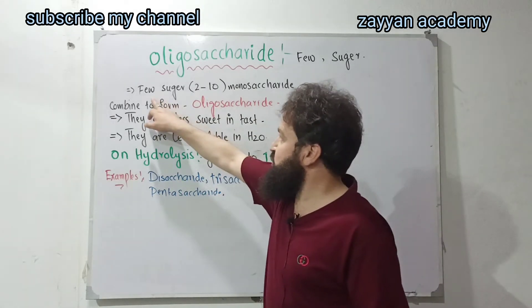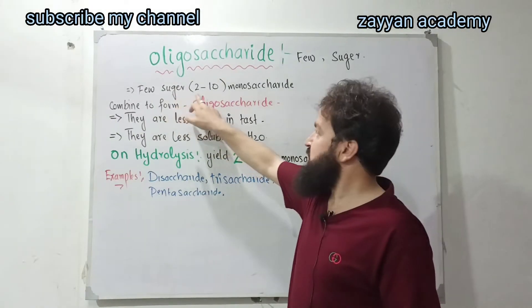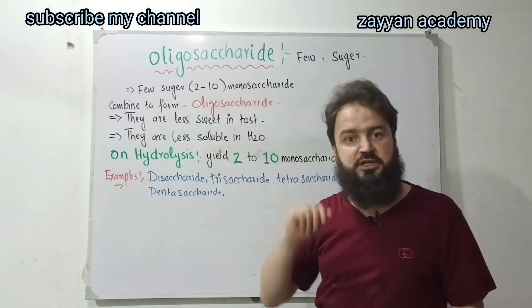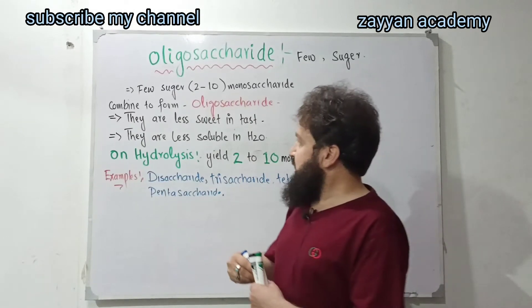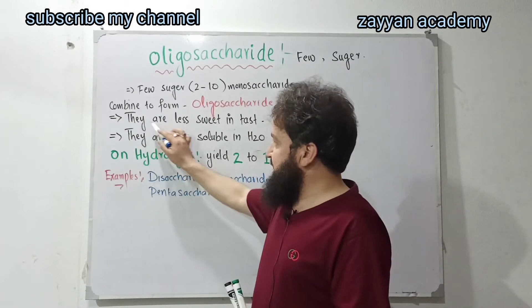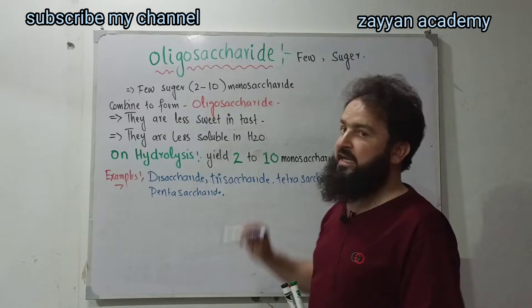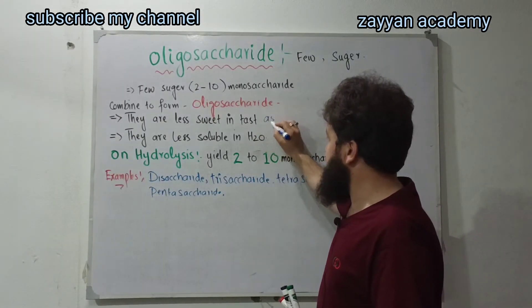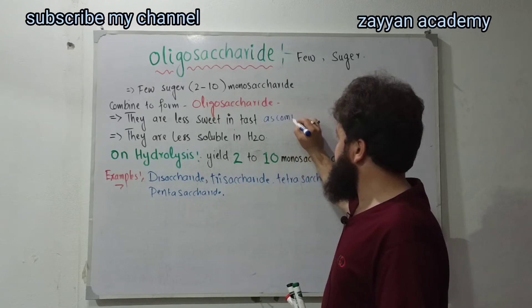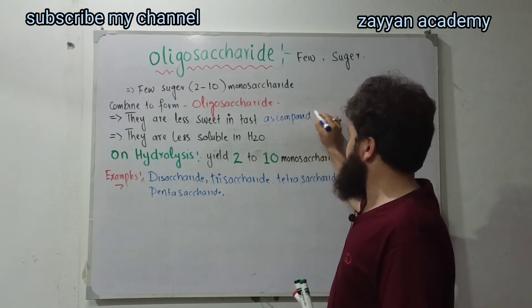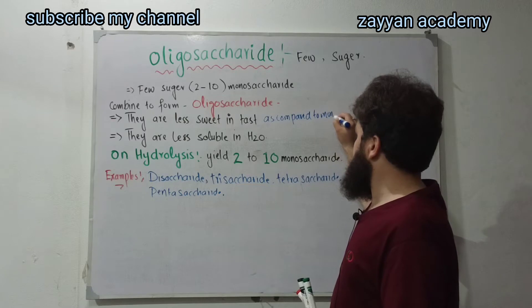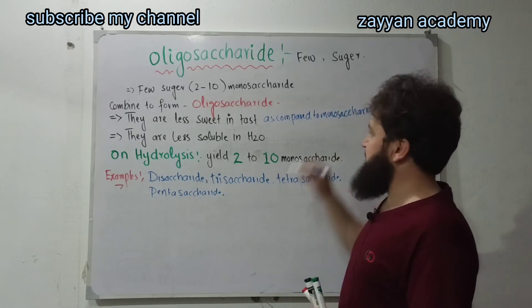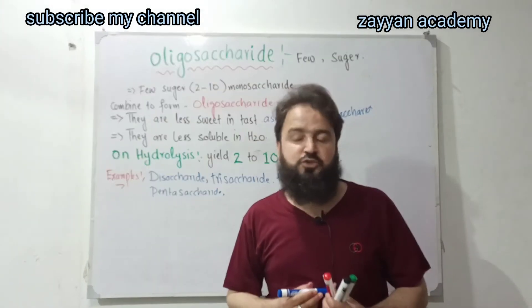If you have 2 to 10 monosaccharides combined to form oligosaccharide — they are less sweet in taste as compared to monosaccharide.